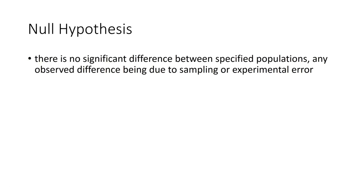First off, we deal with the null hypothesis. The null hypothesis is that hypothesis that you set up in the beginning. It basically states that there is no significant difference between specific populations, any observed difference being due to the sampling or experimental error. Basically what we're testing is that the effects you are looking at have no difference on what you've got.